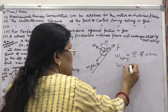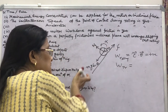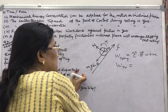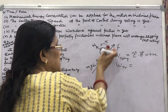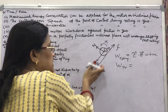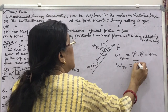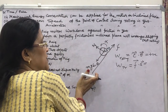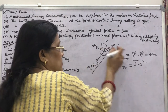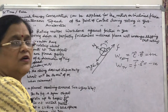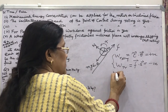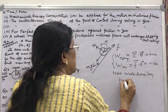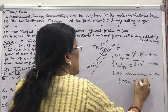In the translational motion, Mg sin θ produces the acceleration, and weight acts downward while frictional force acts upward, but displacement is downward as the body comes down. So the angle between frictional force and displacement is 180 degrees, making this component negative. Therefore the net work done by the frictional force is zero.